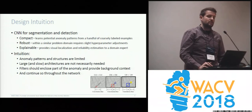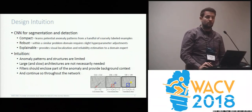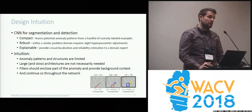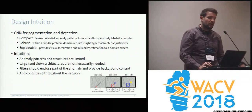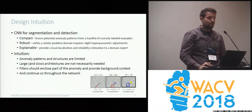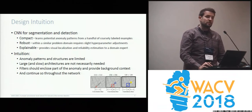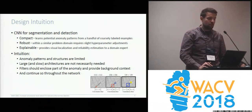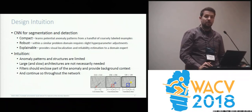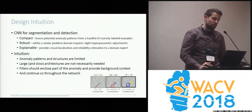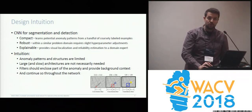By compact, we mean that it is able to learn anomaly patterns from a handful of examples. By robust, we mean that within a similar problem domain, it requires merely slight, if any, parameter adjustments. And by explainable, we mean that it provides visual equalization and reliability estimation to a domain expert.